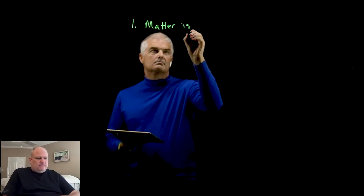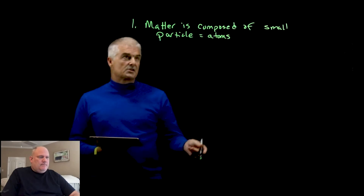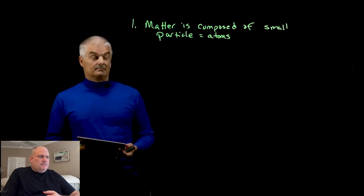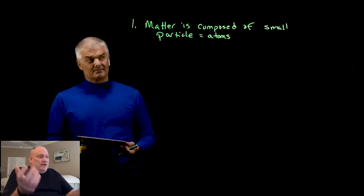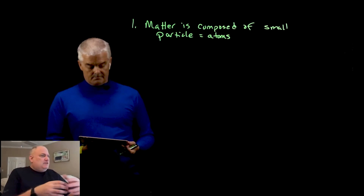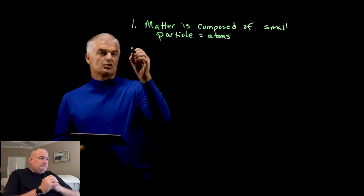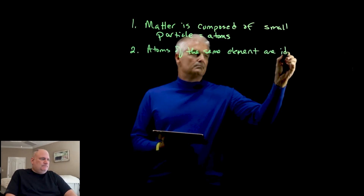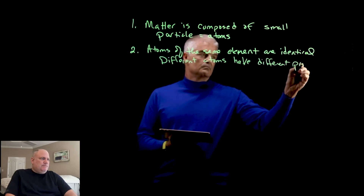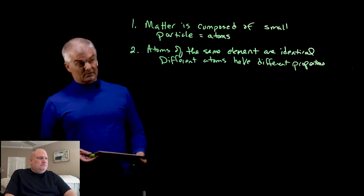He came up with some statements, and you need to understand that no one knew anything about the atom. Picture your mind like an amphitheater full of people — everything he said was mind-shattering. The first point: matter is composed of small particles called atoms. That seems obvious to us, but people didn't know this, so him saying that everything around us is made up of atoms is kind of a big deal.